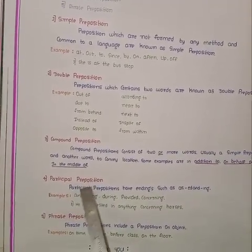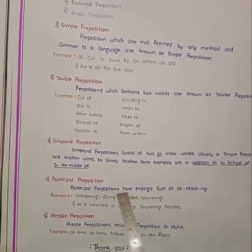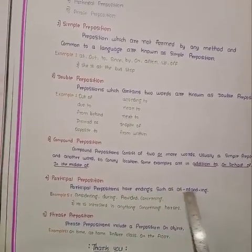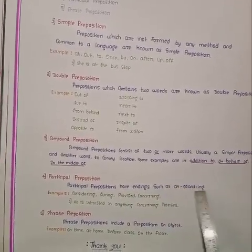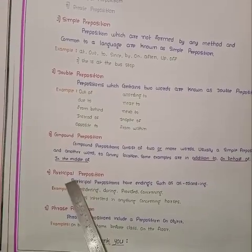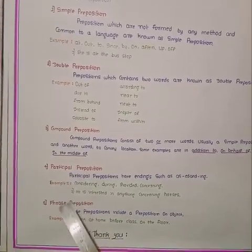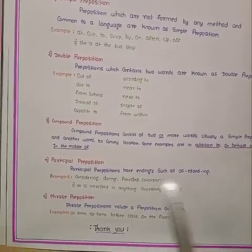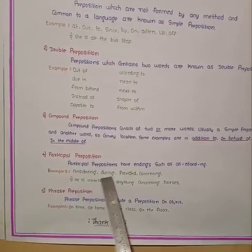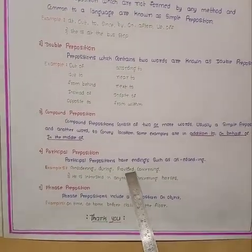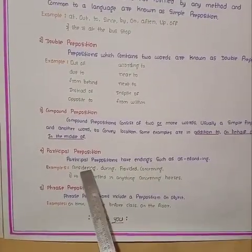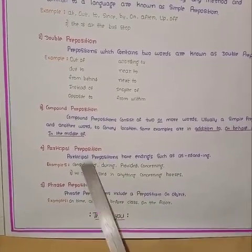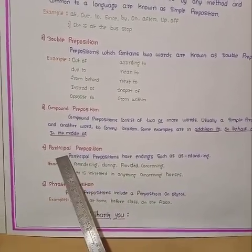Fourth one: Participle preposition. Participle prepositions have endings such as -ed and -ing. It means prepositions have ending -ed or -ing. Examples: considering, during, provided, concerning — ending in -ing and -ed. These are examples of participle preposition.